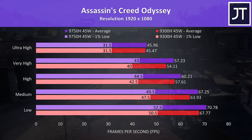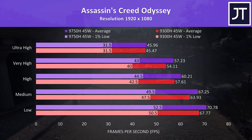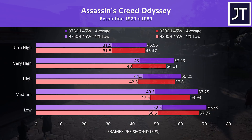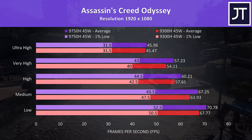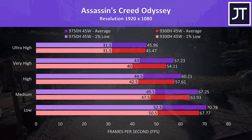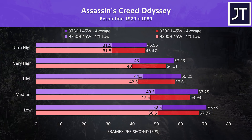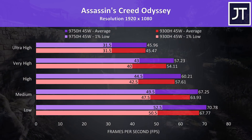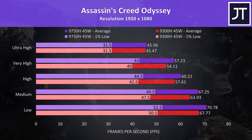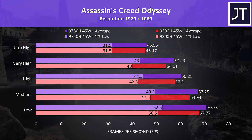Assassin's Creed Odyssey was tested using the game's benchmark. The i7 is ahead at the lower setting presets, 4% faster than the i5 at low settings, then at maximum where we're presumably less CPU bound it's now just 1% faster with the same 1% low performance.